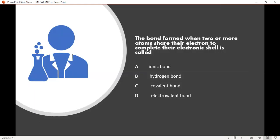The next question is, the bond formed when two or more atoms share their electrons to complete their electronic shell is called. Option A, Ionic bond. Option B, Hydrogen bond. Option C, Covalent bond. And Option D, Electrovalent bond. Here, the correct answer is Option C, Covalent bond.